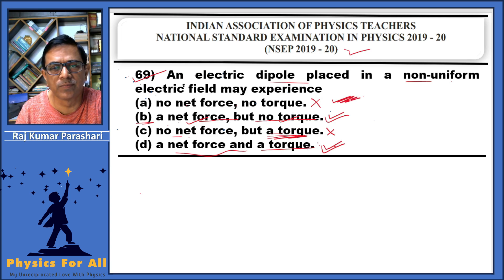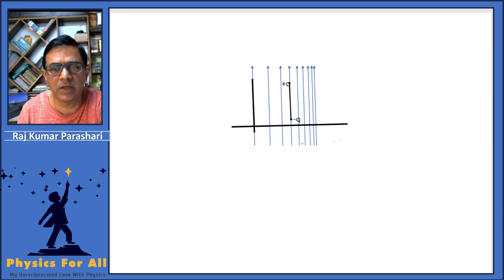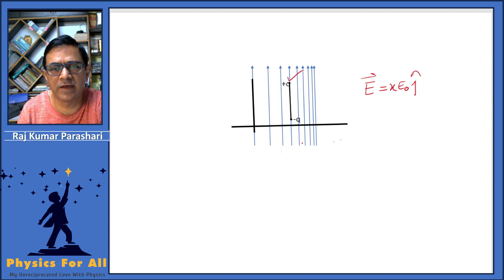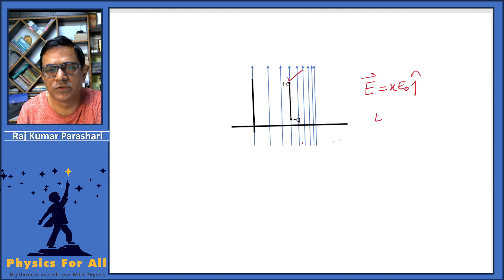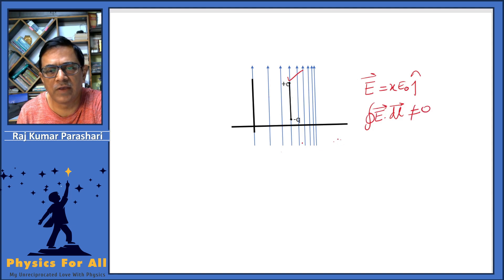In a few solutions you may also find option A considered correct with the argument using a non-uniform electric field represented by E vector = x·E₀ ĵ. If you place an electric dipole in that configuration, the net force is zero and torque is also zero. However, such a type of electric field does not physically exist because the line integral of the electric field over a closed loop would not be zero, and hence option A remains incorrect.